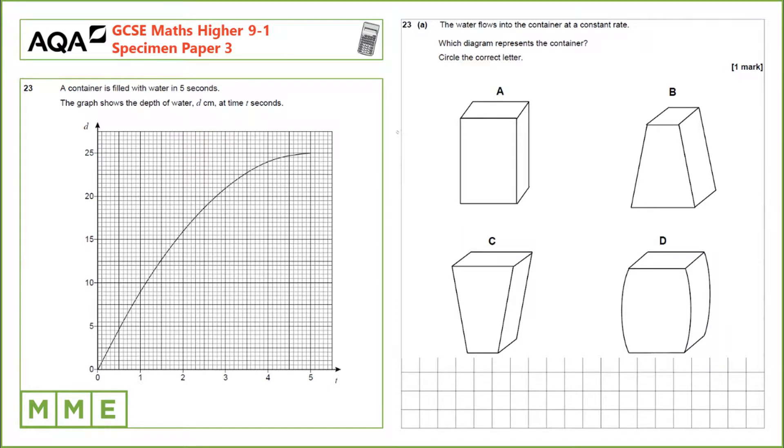Question 23. A container is filled with water in five seconds. The graph shows the depth of water d at time t seconds. The water flows into the container at a constant rate. Which diagram represents the container?